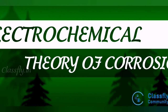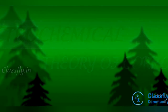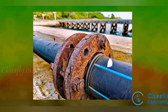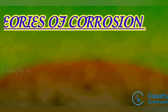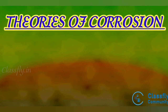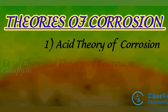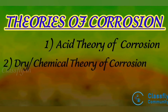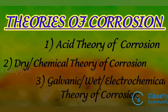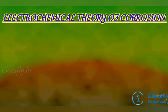Today we are discussing the electrochemical theory of corrosion. Corrosion is defined as the destruction of metal or alloy by the surrounding environment through chemical and electrochemical changes. There are mainly three theories of corrosion: first, acid theory of corrosion; second, dry or chemical theory of corrosion; third, galvanic or wet or electrochemical theory of corrosion.